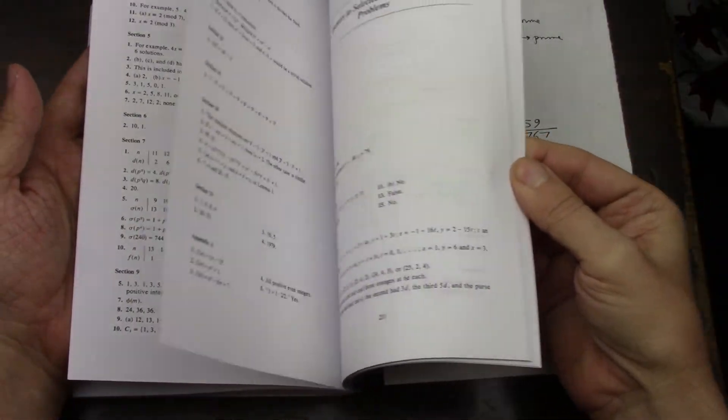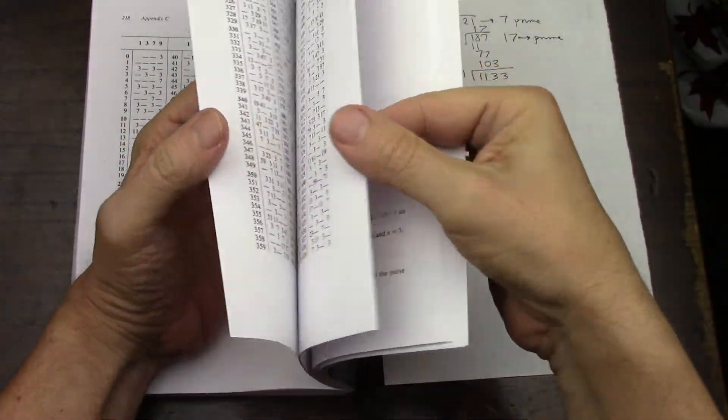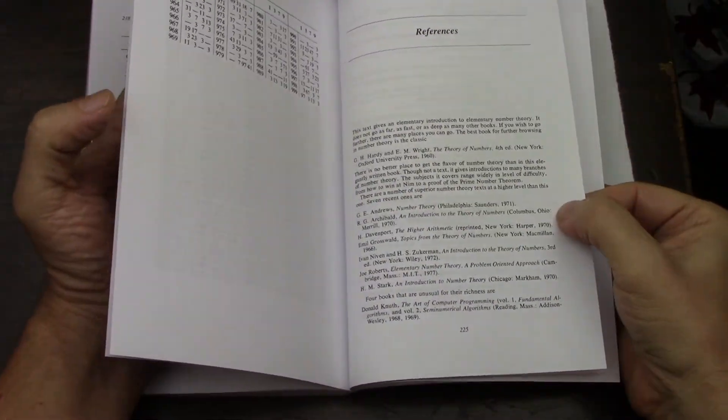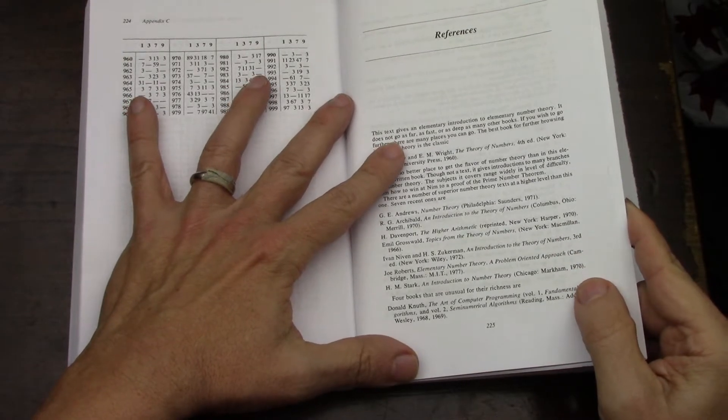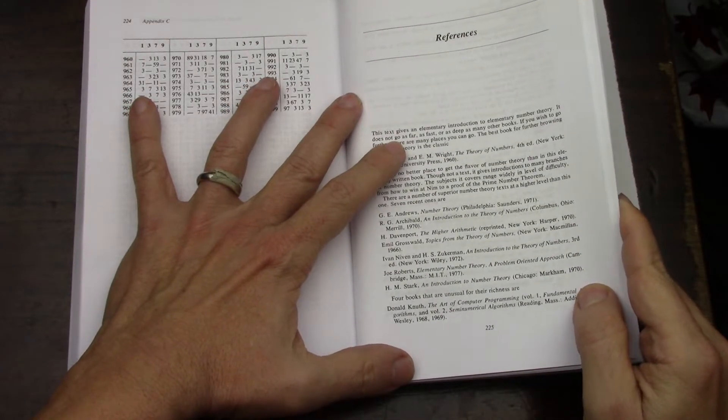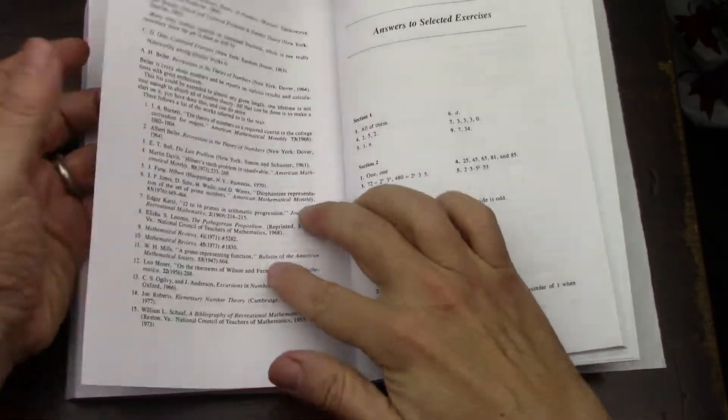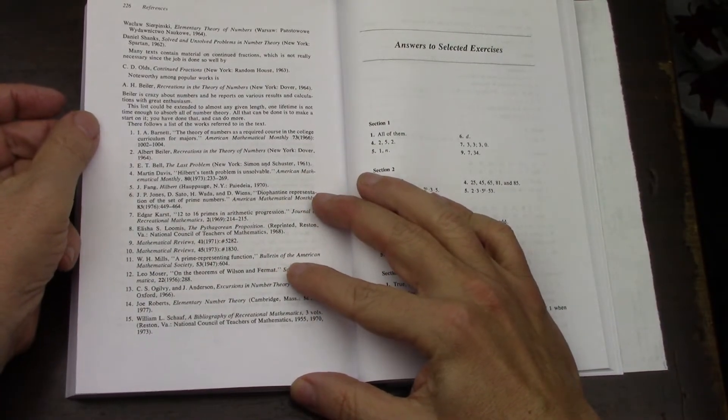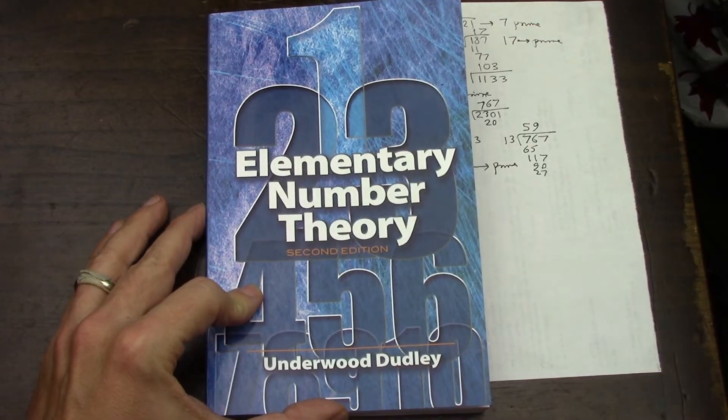So yeah, it's got problems. It's got a few references. I saw a list of references, but I always like those because I always find new books to get. And out of these, look at that, he quotes the Art of Computer Programming. That's interesting. Yeah, so there you have it. That is Dudley, Elementary Number Theory. Nice. Thank you.